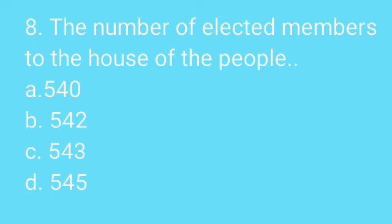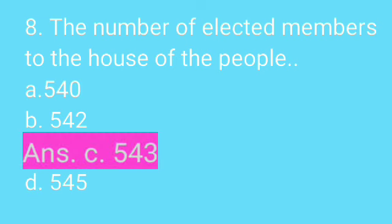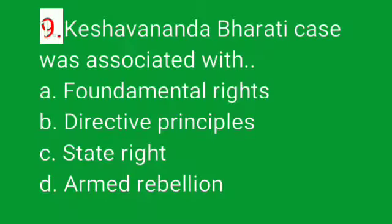Our next question is: what is the number of elected members to the House of the People? The options are A — 540, B — 542, C — 543, D — 545. The correct answer is 543.